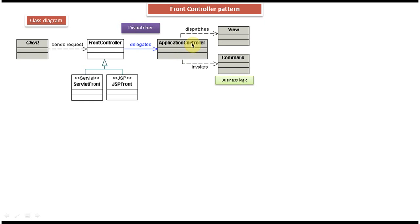Then the application controller dispatches the request to the view. The view collects the information from the application controller and displays it in the browser so that the client can see that information. This is how the front controller design pattern works. The classes involved in the front controller design pattern are: client, front controller, application controller, command, and view.